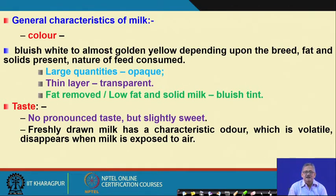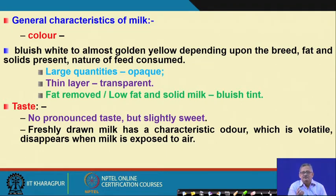If it is defatted milk, then it may have a bluish tint. If it is thin in quantity it may appear translucent or transparent, but if it is large in quantity it becomes opaque. This opaqueness is because of light scattering through the different particles of the milk.